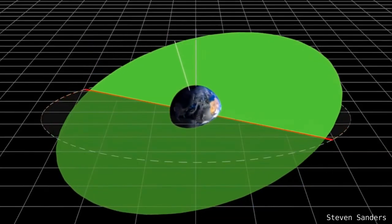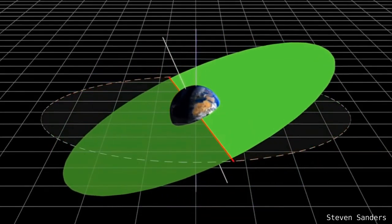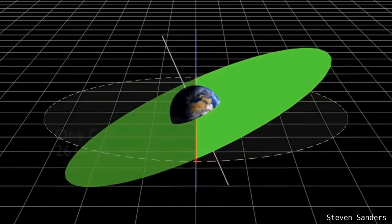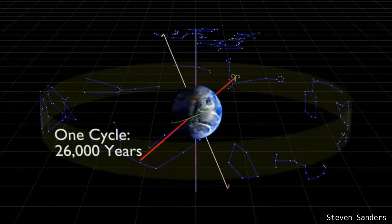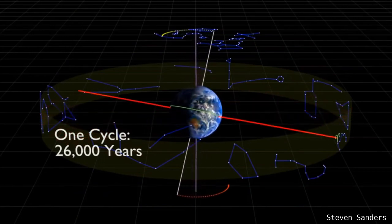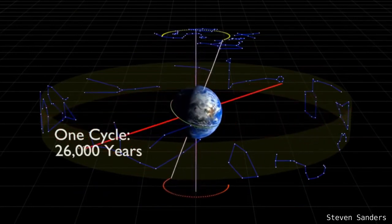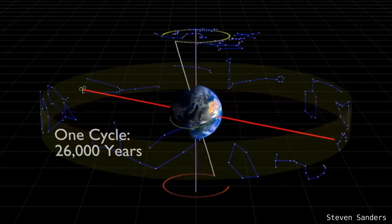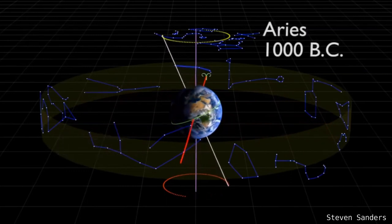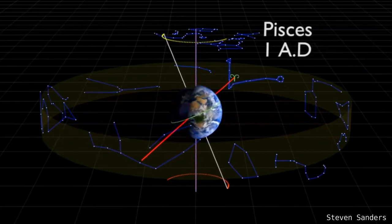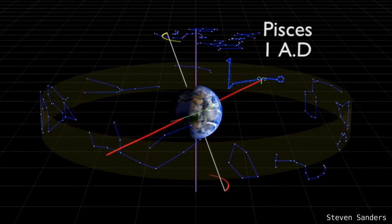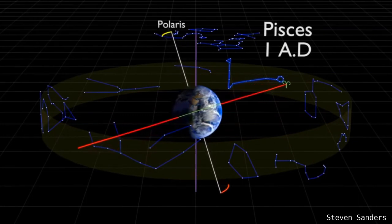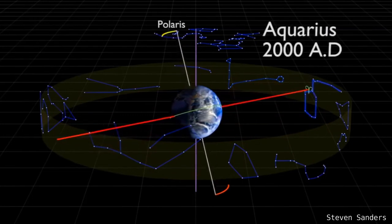Yukteswar's description of the Yuga cycles is what we call today axial precession. The Earth wobbles like a spinning top. In Yukteswar's time, there was little astronomical knowledge regarding the exact timing of one precession cycle. Today we know that one cycle takes approximately 26,000 years.